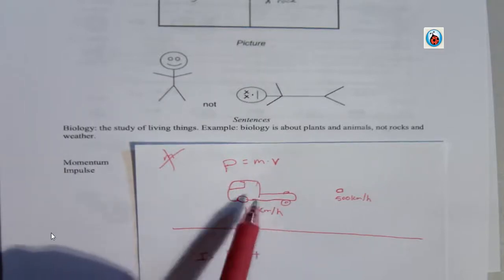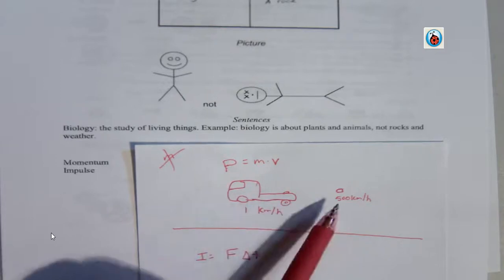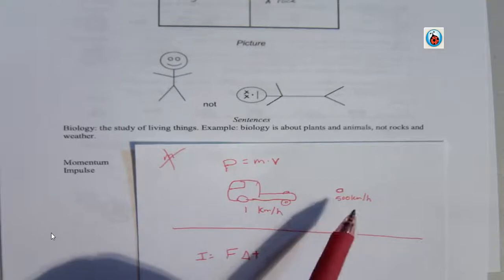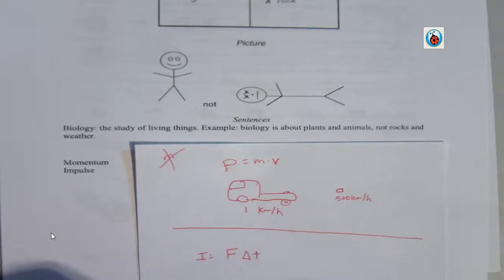So, our example here is you have a semi and you have a bullet. Can a bullet have more momentum than a semi? Absolutely. It's just got to have way more mass. The mass has got to be a lot higher. If the semi is moving slow, and it weighs a crap ton, and the bullet's moving really, really fast, and although it probably weighs like a gram, it's going to have more momentum.